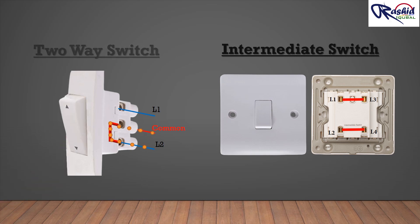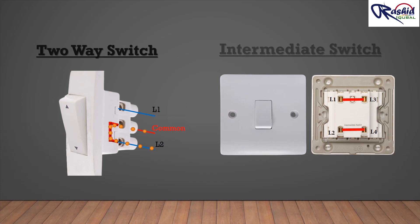Intermediate switch. A light switch with two pairs of two terminals, which can be switched between straight-through or swapped wiring. Typically used as part of a circuit to control a light or other device from three or more locations.